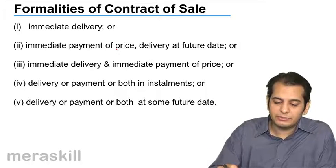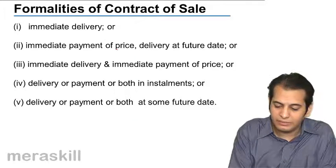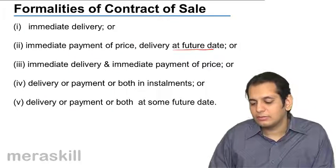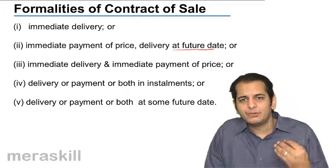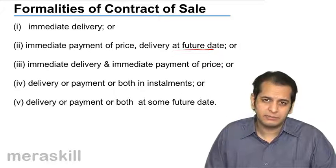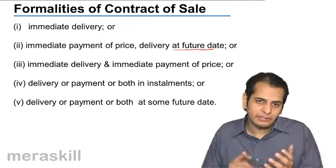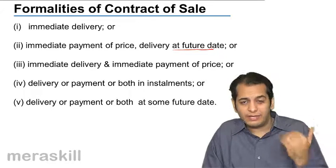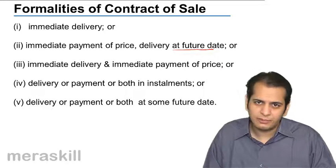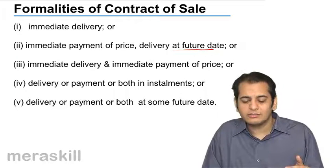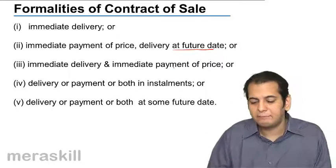When the contract of sale is made, you will either make immediate delivery or delivery at a future date. For example, if you go to a shop to purchase a TV, the seller will either give you the TV right away, or you pay for the TV and he delivers it a day or two later — that is on a future date. Or the third option: you pay the price there and then and take the delivery there and then, so both delivery and payment are immediate.